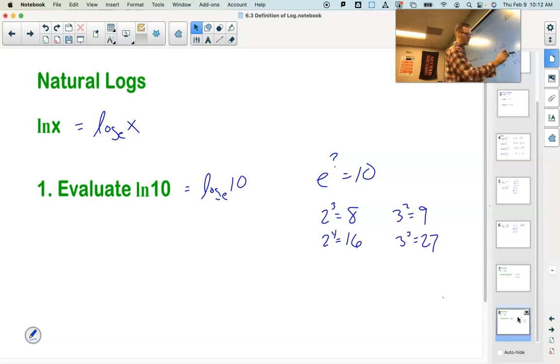If I round E up to 3, 3 squared is 9. 3 cubed is 27. So it's probably, if I'm looking at this, it's got to be bigger than 2, but probably smaller than 3.